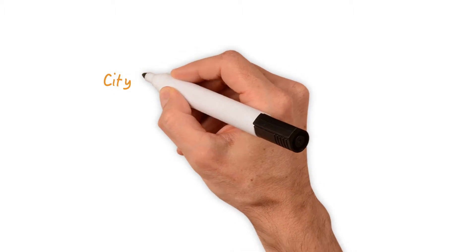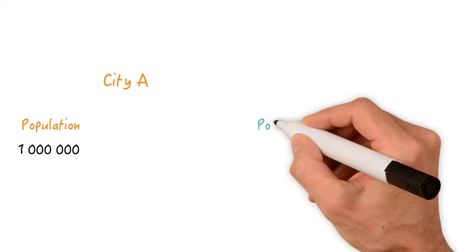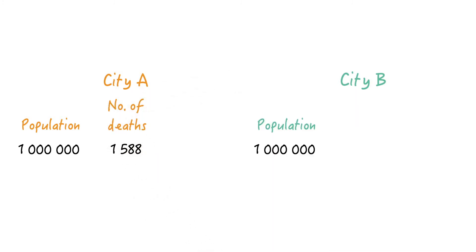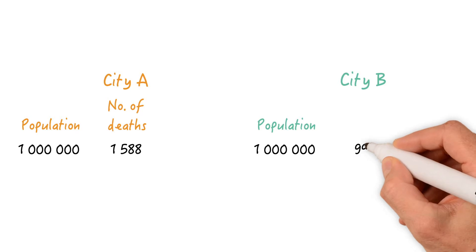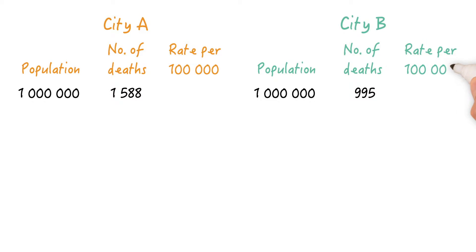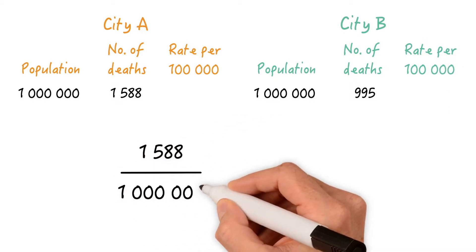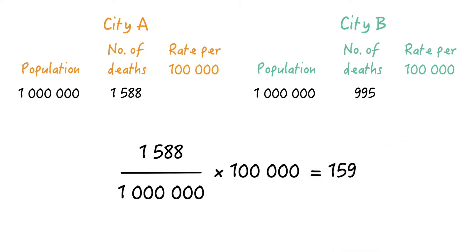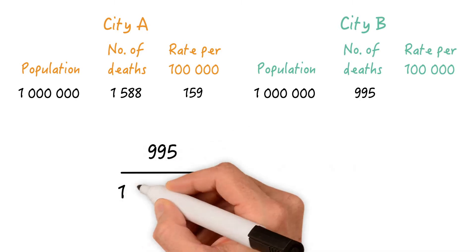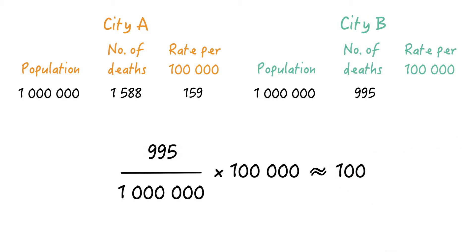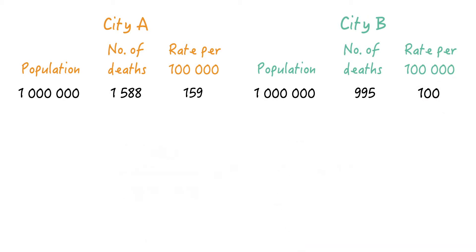Let's compare two populations. City A has a population of a million inhabitants, and so does City B. In City A, 1,588 people died, whereas in City B, 995 people died. Calculating death rates per 100,000: 1,588 divided by 1 million times 100,000 equals a death rate of 159, and 995 divided by 1 million times 100,000 equals a rounded death rate of 100 per 100,000. So it looks like the mortality rate in City A is much higher than in City B.